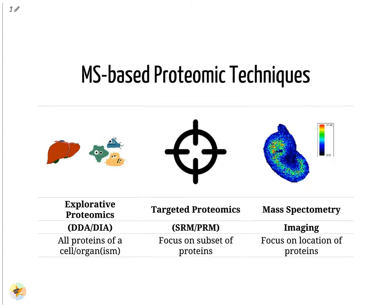Different mass spectrometry-based proteomic techniques exist. The most common one is explorative or shotgun proteomics, which aims to identify as many proteins as possible from a sample. It comes in two flavors: data-dependent acquisition (DDA) and data-independent acquisition (DIA). A second technique is targeted proteomics, which measures only a predefined set of proteins with very accurate quantification. A third technique is mass spectrometry imaging, which measures the spatial distribution of peptides or proteins in thin tissue sections.